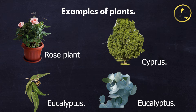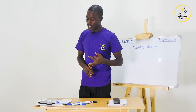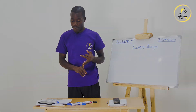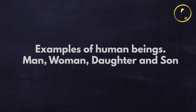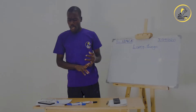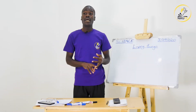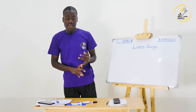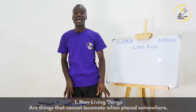Human beings are also an example of living things. We have man, woman, daughter, son — those are examples of human beings. Next, we have non-living things. Non-living things are things